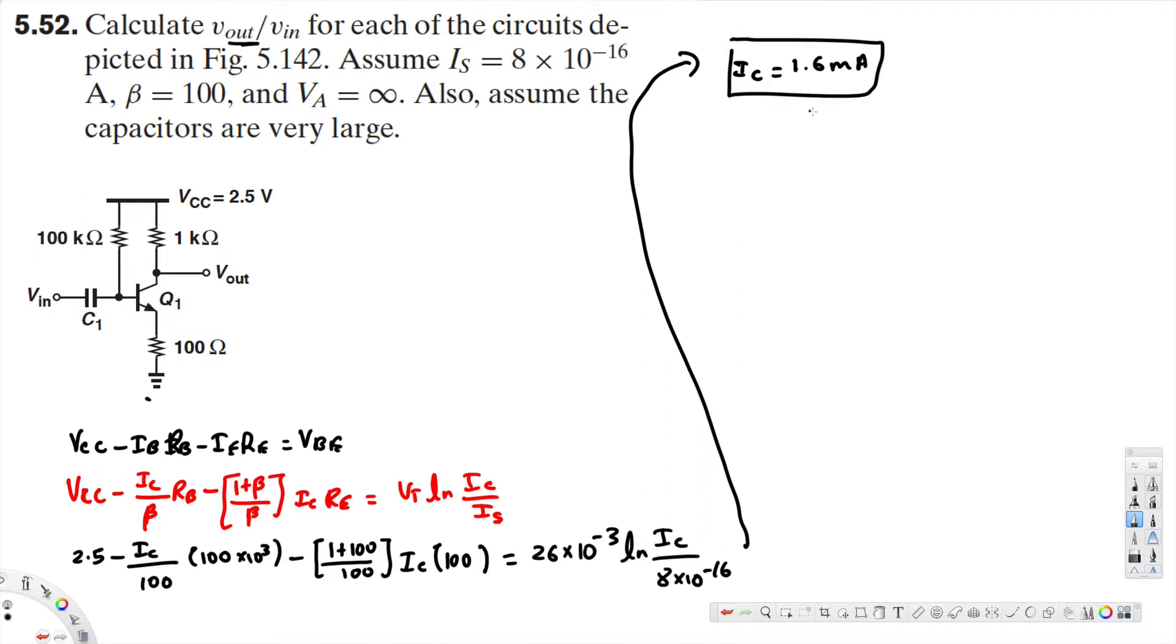Now we have found I_C. The next thing is we're going to find the transconductance, because our final purpose is to find the voltage gain, v_out over v_input. That's the voltage gain A_V, which is what we're trying to find.